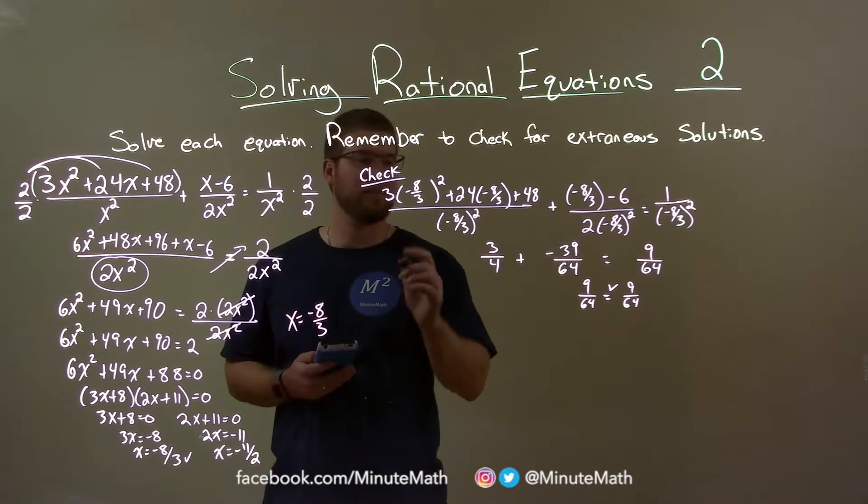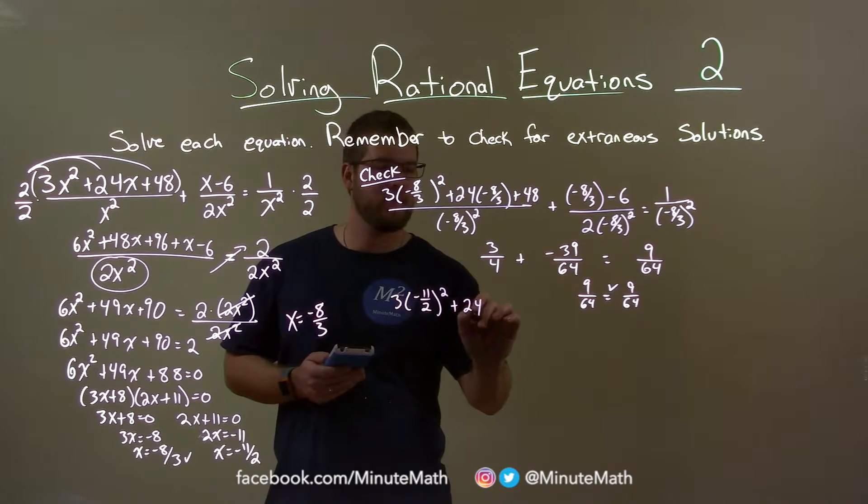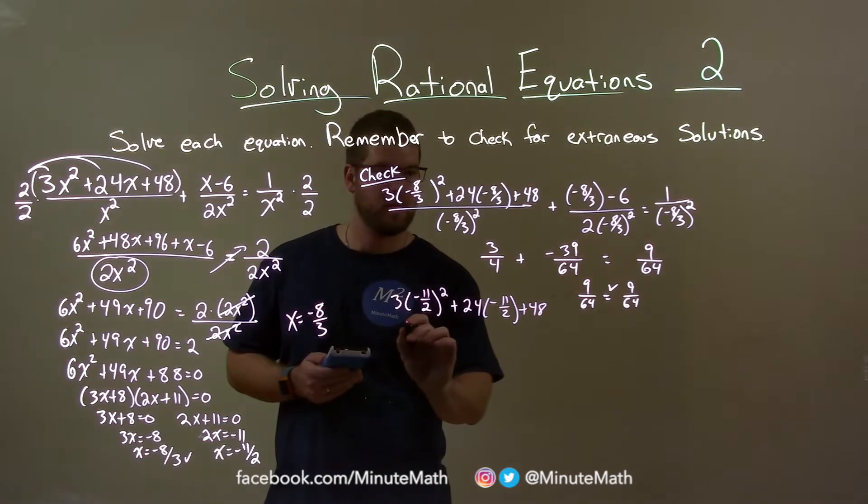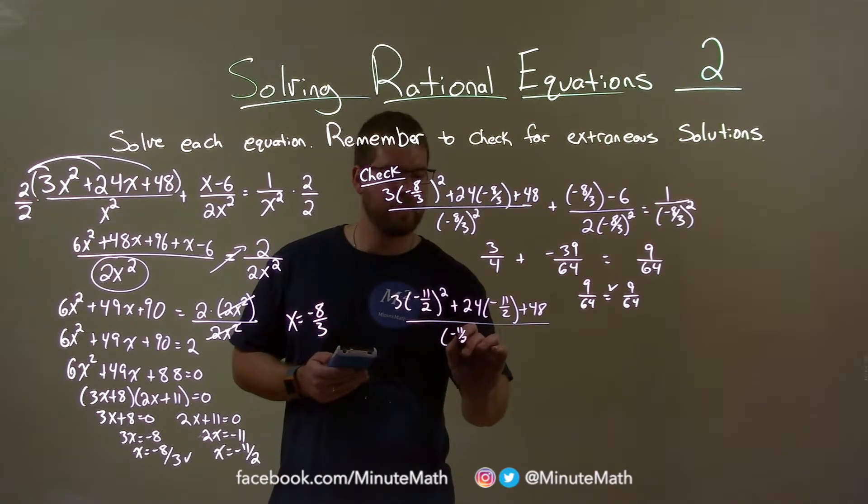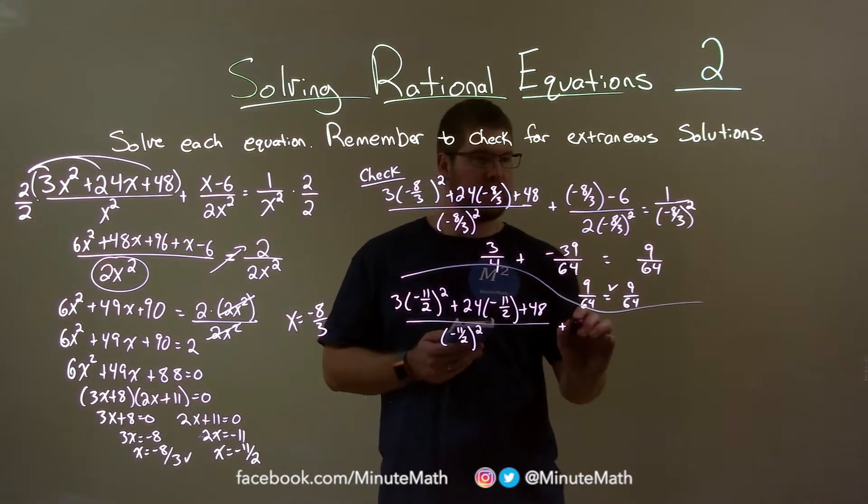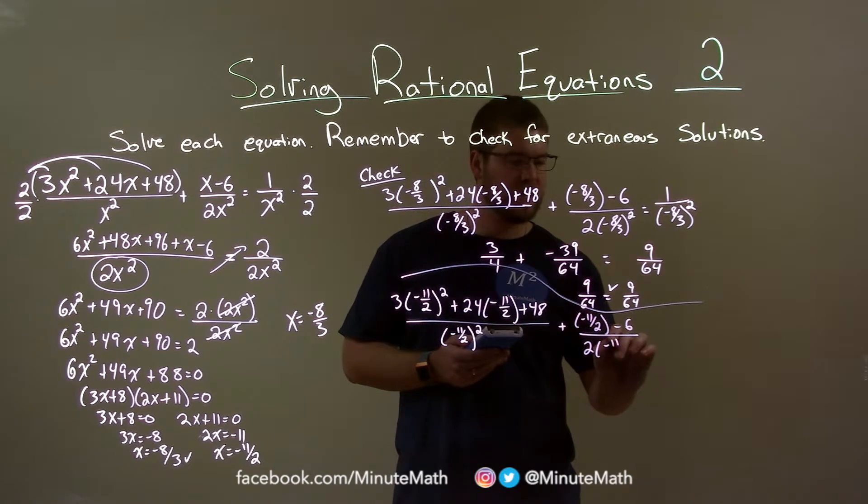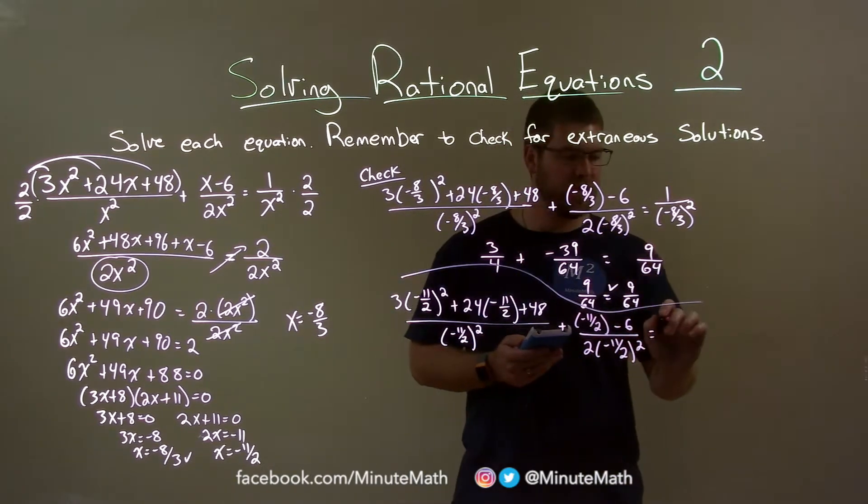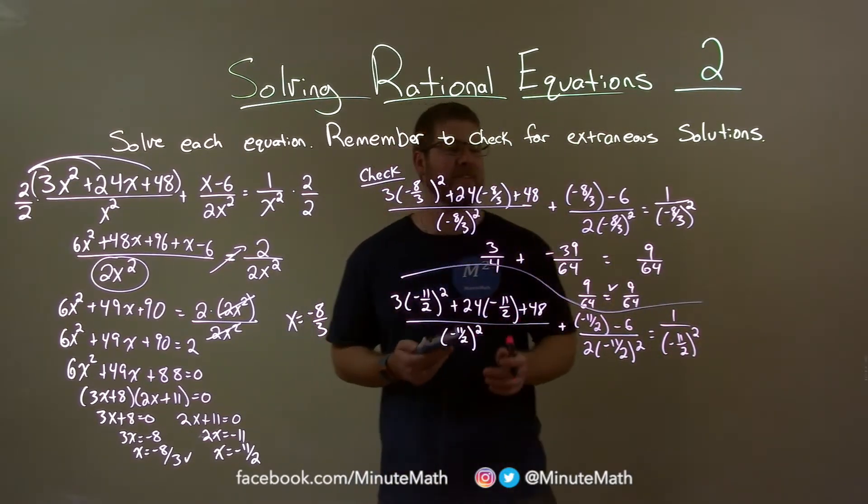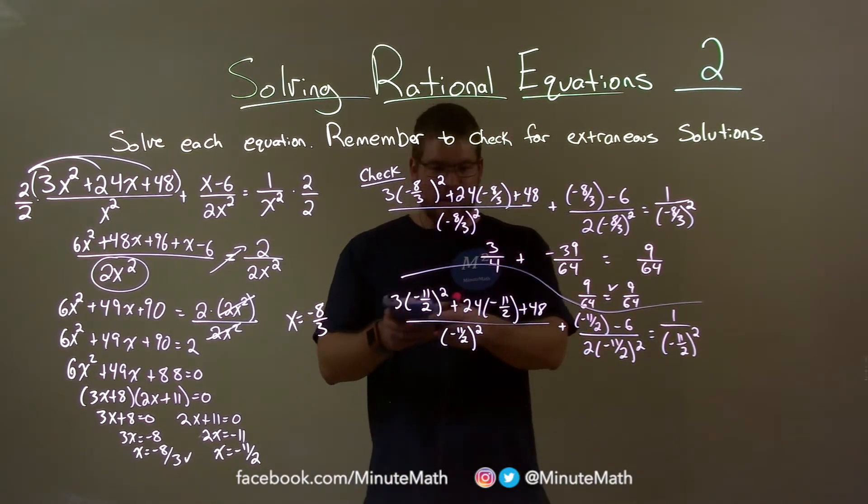Let's double check the other one. The other check here is negative 11 halves. Same process. 3 times negative 11 halves squared plus 24 times negative 11 halves plus 48 over negative 11 halves squared, plus negative 11 halves minus 6 over 2 times negative 11 halves squared, and that's equal to 1 over negative 11 halves squared. For every x value, we're putting negative 11 halves. Don't forget the square there. We'll see if the left and right hand side are equal again.